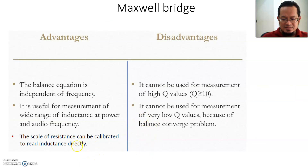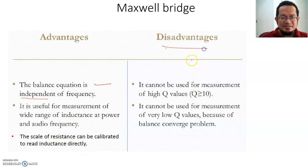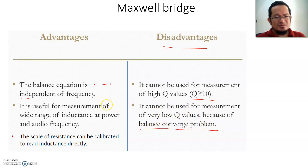There are advantages and disadvantages of the Maxwell bridge. Advantages: the balance equation is independent of frequency; it is very useful for measurement of a wide range of inductances at power and audio frequencies; and the resistance scale can be calibrated to read inductance directly. Disadvantages: it cannot be used for measurement of high Q values greater than 10, and cannot handle very low Q inductors due to balancing convergence problems.